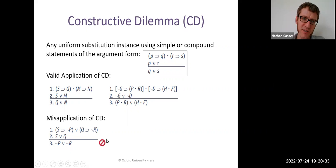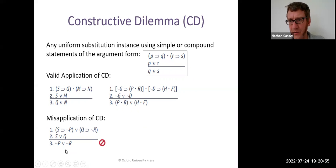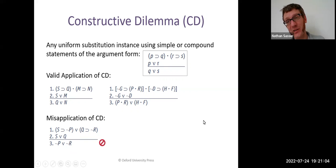What went wrong in this misapplication? We've got 'if S then not P' or 'if Q then not R' as line one, and S or Q as the disjunction, and the conclusion is 'not P or not R'. What's the problem? Look at line one — it's a disjunction, not a conjunction. It's an 'or', not an 'and', and that makes all the difference.